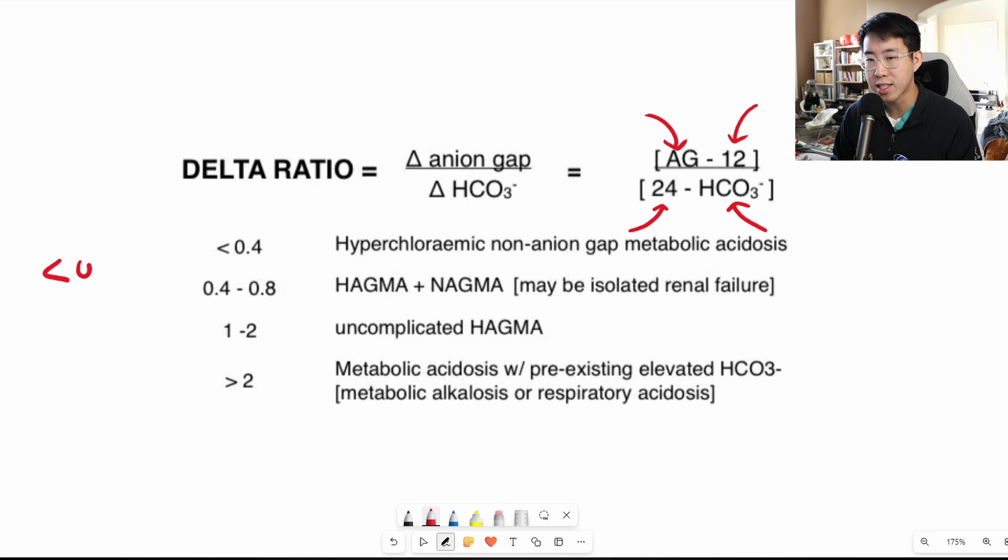Any ratio less than 0.8 is going to tell you that the patient has both a high anion gap metabolic acidosis as well as a non-anion gap metabolic acidosis.